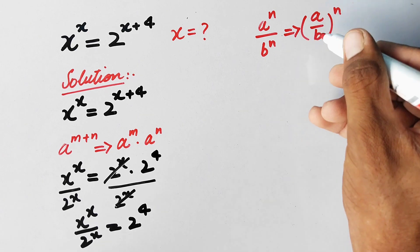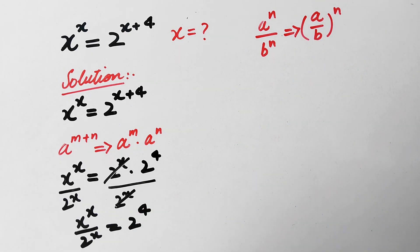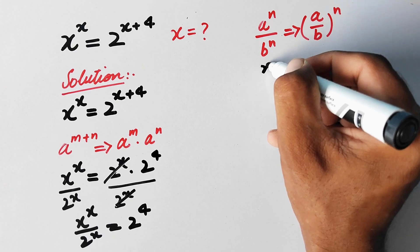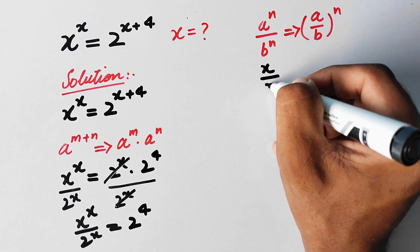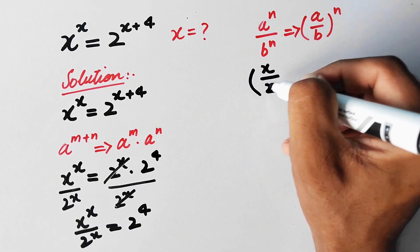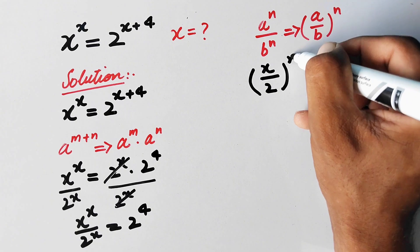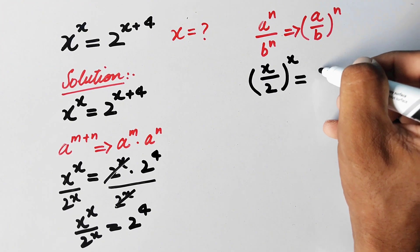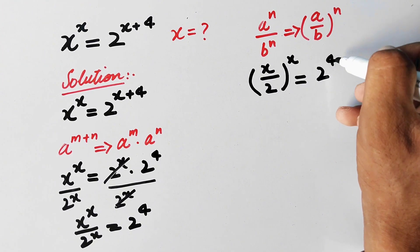So according to this rule, we can write our value as x over 2, whole power x, is equal to 2 raised to power 4.